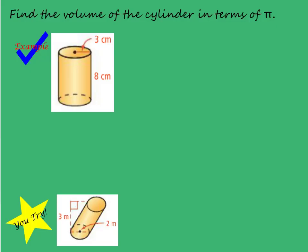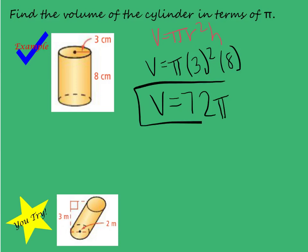Let's look at an example. Volume equals pi r squared h. So let's start plugging in. My volume equals pi, my radius is 3, and my height is 8. So 3 squared is 9, and 9 times 8 gives me 72. So my volume is 72 pi. And I'm done. I leave it just like that in terms of pi. Then you go ahead and do that you-try there.